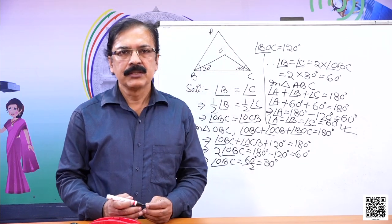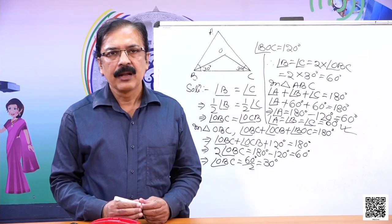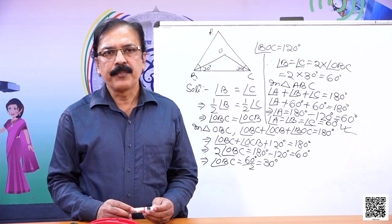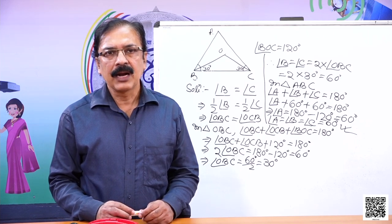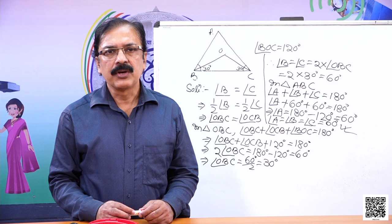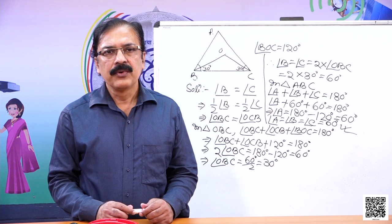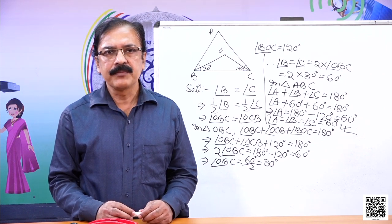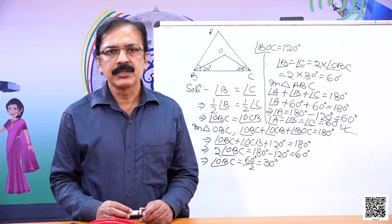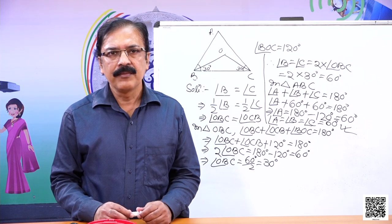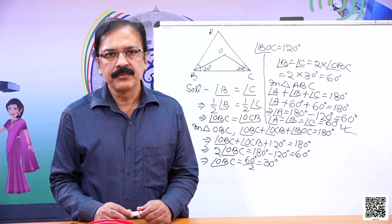Dear students, today we learned about the angle sum property of a triangle — the sum of the interior angles of a triangle is 180 degrees. Using this property, we solved several problems. Have a good day. Thank you.